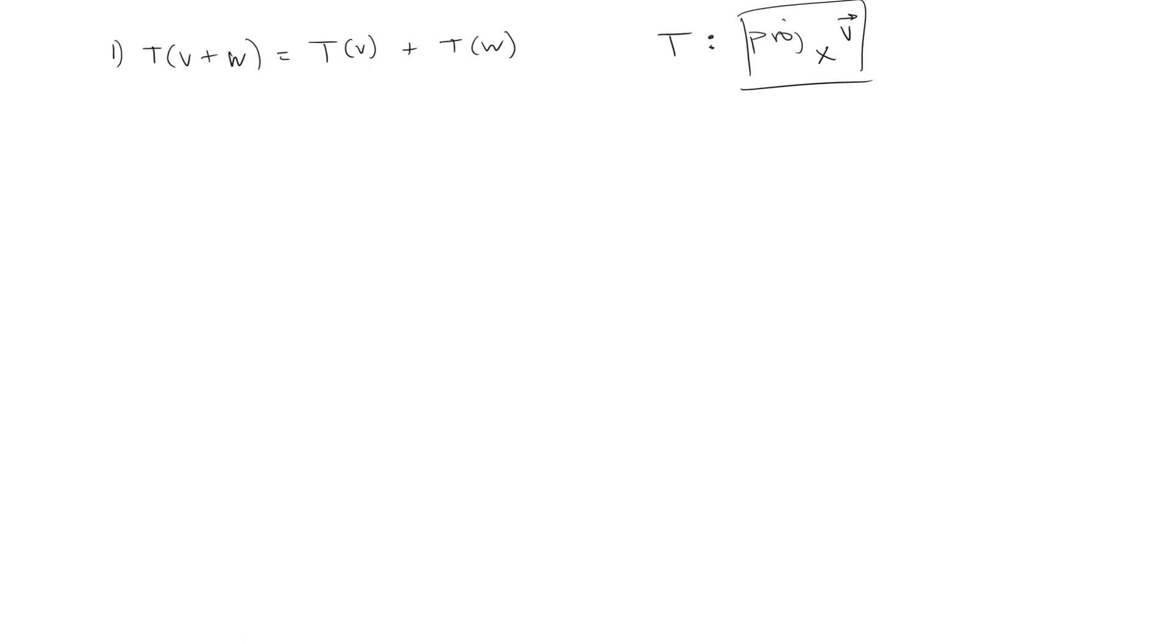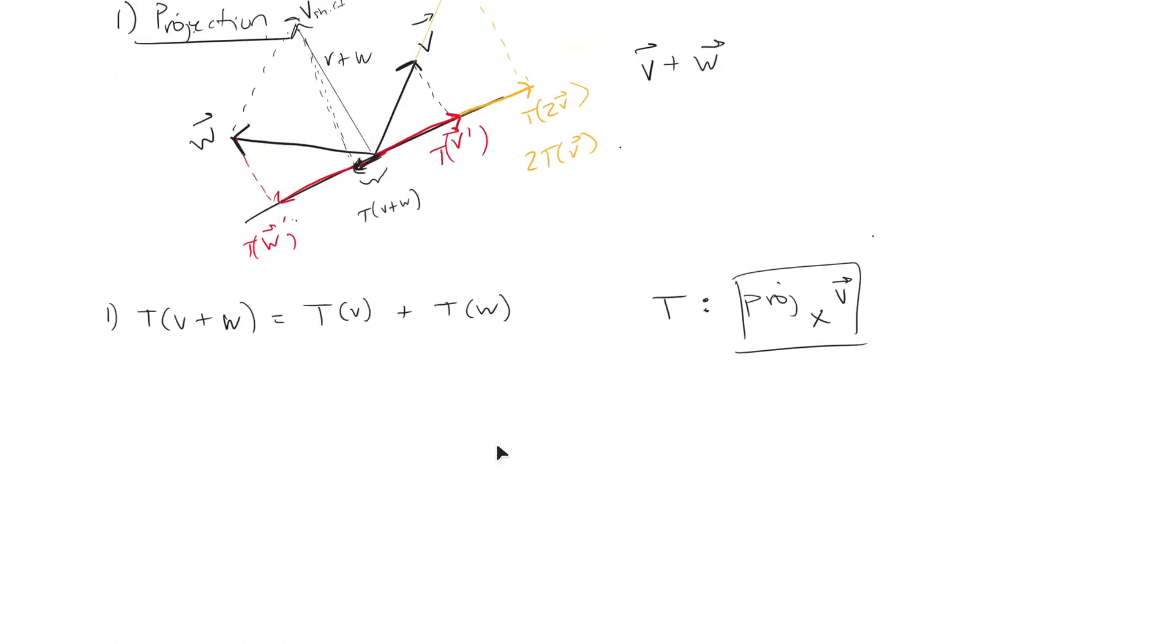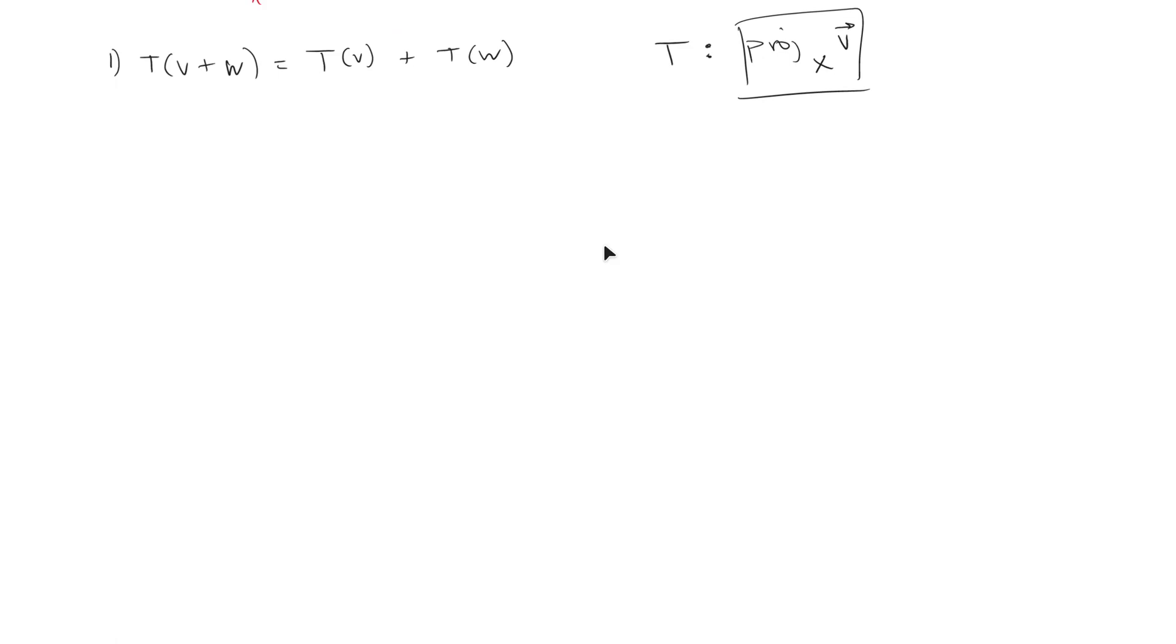Now, how do we get that projection vector? Because if we go back up, we're taking V here and creating the transformation of V, which is a projection onto that plane that we see right there. The formula for it is the projection of V onto X equals X times V times X divided by the length of X squared. This is the transformation function.